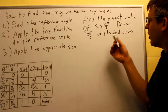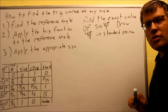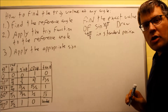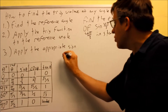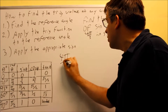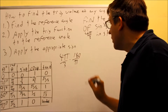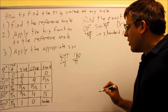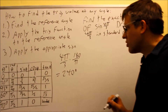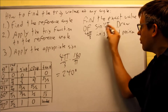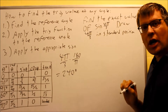Next example: find the exact value of sine four pi over three. Draw four pi over three in standard position. This time we have a radian measurement. If you don't want to deal with radians, you can convert to degrees: four pi over three times 180 over pi. The pi's cancel, three goes into 180 sixty times, giving us 240 degrees. So 240 is our original angle, the same equivalent as four pi over three.